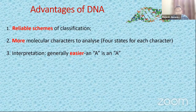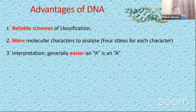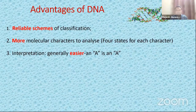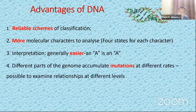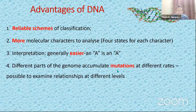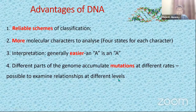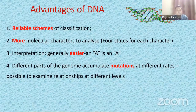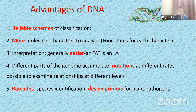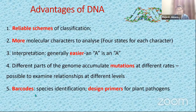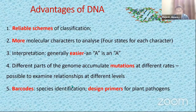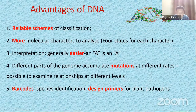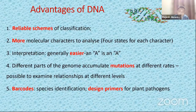Whenever you examine genes, you will see that they accumulate mutations at different rates. So it's possible to examine relationships at different taxonomic levels when you use DNA. Sometimes we can come up with barcodes — specific DNA sequences that can be used for species identification. With DNA, you can also design primers for specific plant pathogens, which is very important for plant pathologists as well.